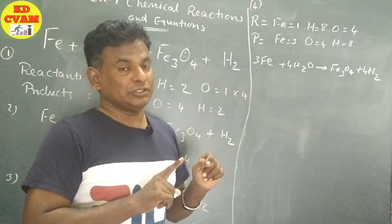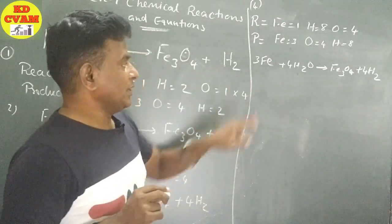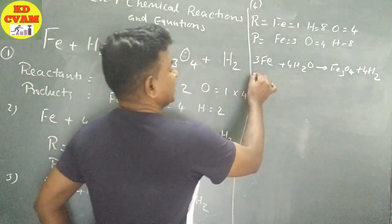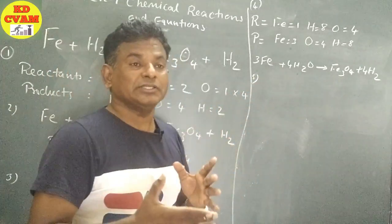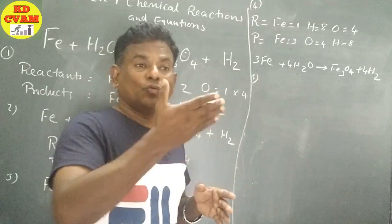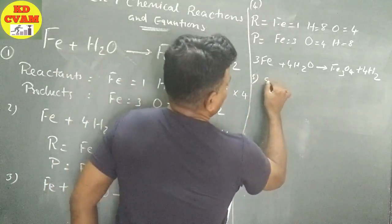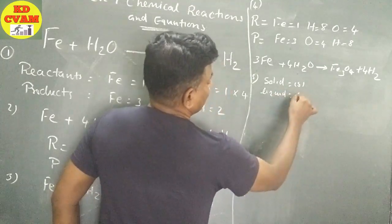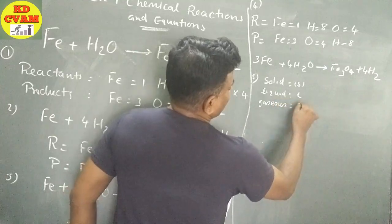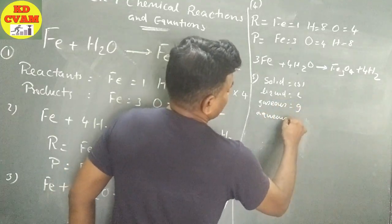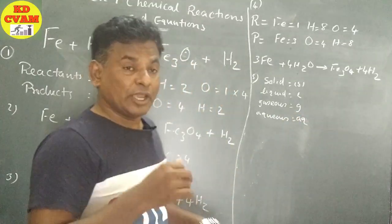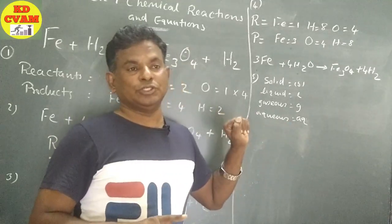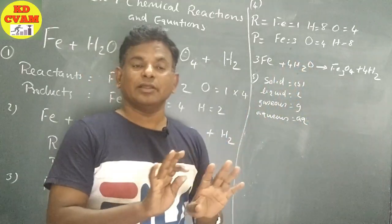This is the hit and trial method. Now we have to look at physical states. This technique provides more perfection to the equation. We denote the physical state of each substance. If we call it solid, we write (s). The solution prepared in water is called aqueous solution, written as (aq).